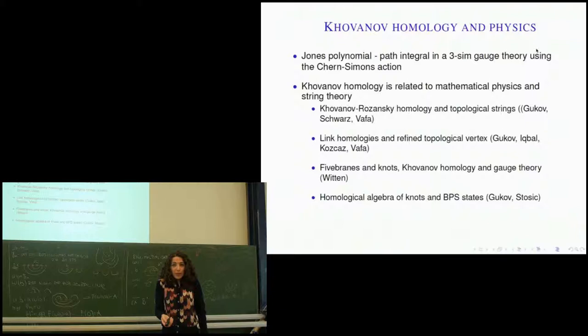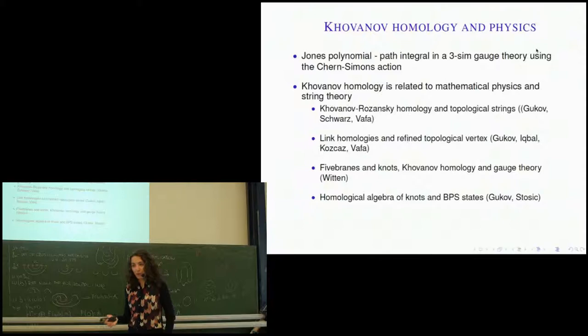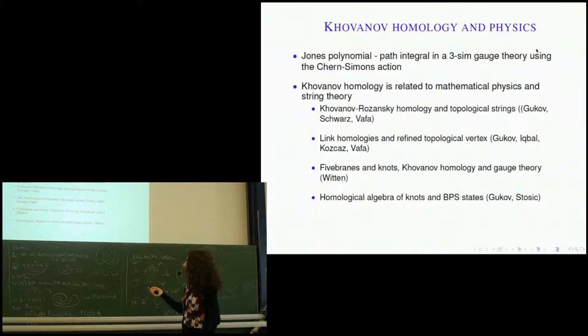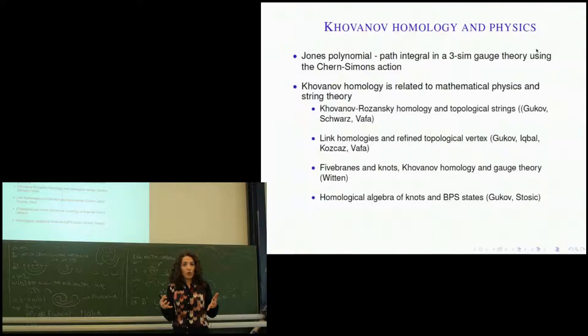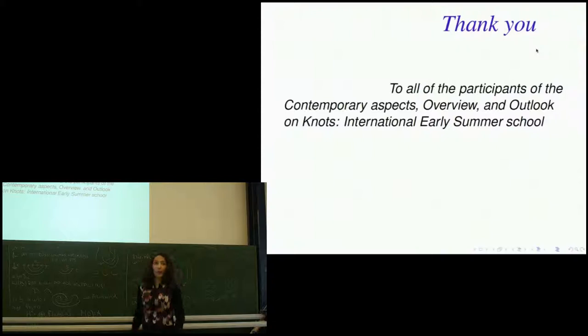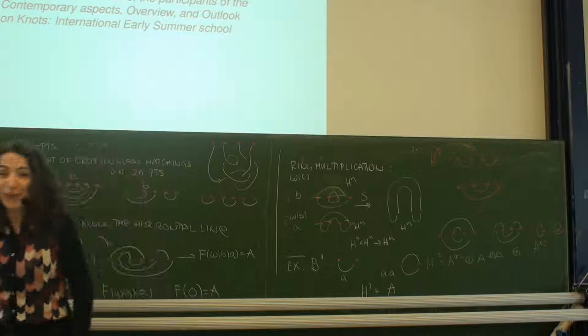Khovanov homology and physics: Jones polynomial has a definition as a path integral in a gauge-theoretic construction related to Chern-Simons action. Witten in 2010 provided an alternative construction of Khovanov homology using five-branes — generators of Khovanov homology are just solutions to certain five-dimensional PDEs. Khovanov homology also relates to BPS states and string theory. With that, I'd like to thank you all for a fantastic week.